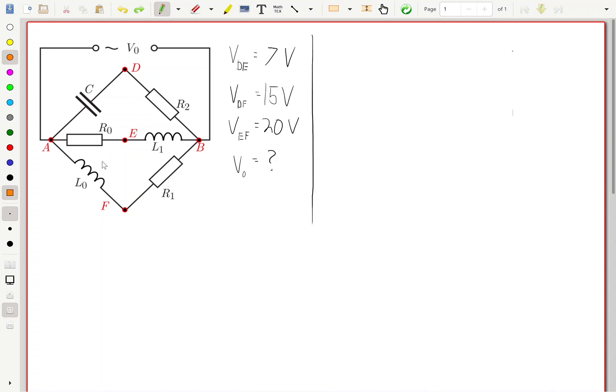The problem states that the potential difference from D to E is 7 volts and so on, and they want us to find the potential difference between A and B or V0.